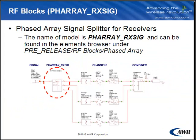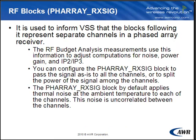A couple of new models have been added to the RF blocks category. The phased array block was added keeping in mind the needs of radar designers. The block is used to inform VSS that blocks following it represent separate channels in a phased array receiver. The block can be used to measure noise figure, power, gain, IP2 and IP3 of a phased array antenna.